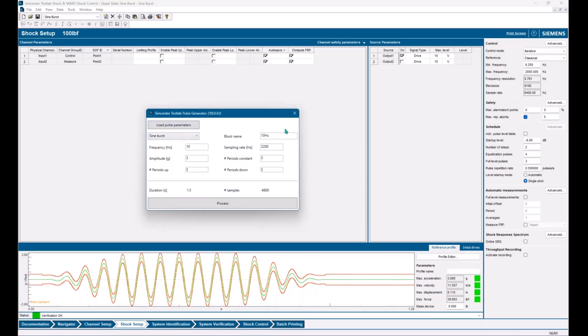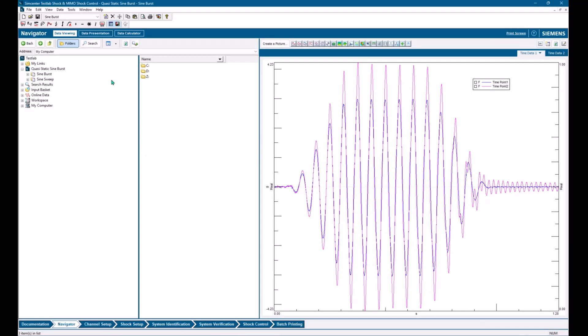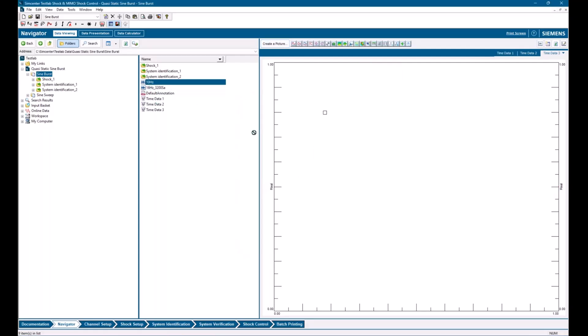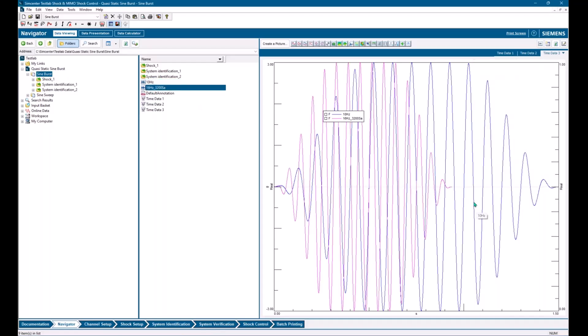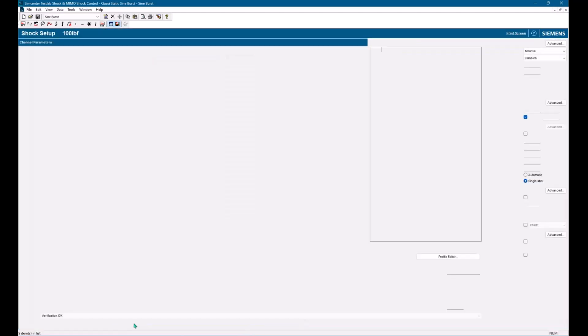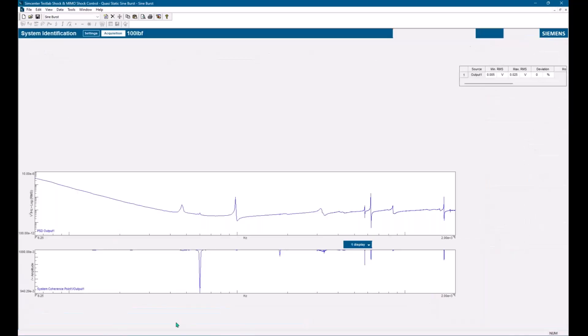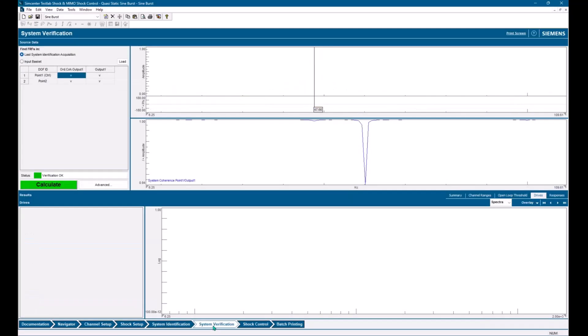Now what this does is it dumps this into the active section. So now if I go back to navigator and I look in my active section, which is sine sweep, I now see I have a couple different pulses in here. There I am. So there's our 10 hertz. There's our 16 hertz. And we can display that here to take a look at it as well. Here's our 10 hertz pulse. Here's our 16 hertz pulse. Okay, so right now, we've got our 16 hertz pulse loaded at three Gs. We're going to set this for 1000 hertz. And hit save.